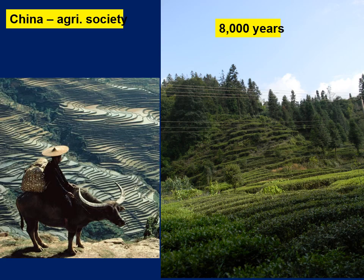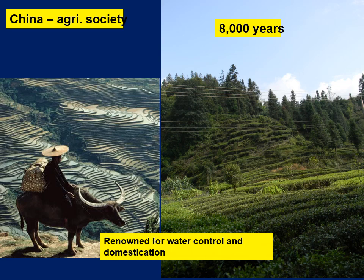For the past 8,000 years, the Chinese have worked the land, constructing terraces as seen in the images — primarily for water control. The Chinese were masters of water control and were also renowned for the domestication of both plants and animals. We often think of Mesopotamia as the cradle of civilization, but China was actually doing those things at the same time or possibly even earlier.